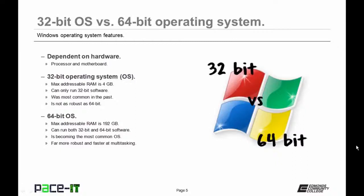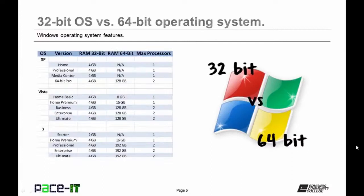64-bit operating systems allow you to address a maximum of 192 gigabytes of RAM. You can run both 32-bit and 64-bit software. It is becoming more and more common, and it's far more robust with much faster multitasking than 32-bit operating systems.